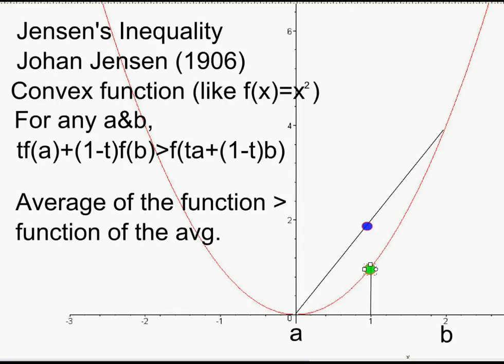Instead of a blue circle, let me make that into a green circle. And so, the average of the function is the blue, the average of 0 and 4. The function of the average is what we get if we put the number 1 into the squared function, and we get 1 squared.